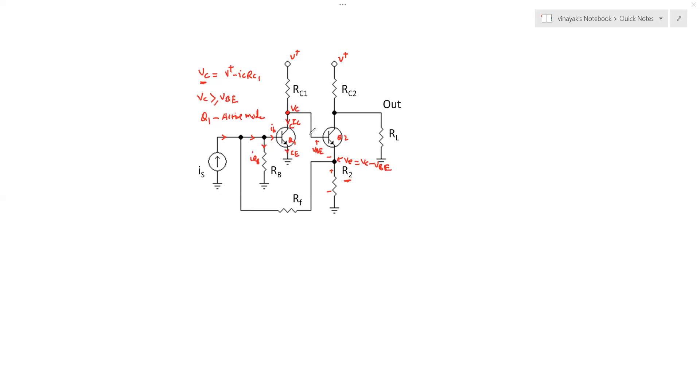So this voltage at the base minus this voltage junction drop is the voltage at the emitter. So this second configuration consisting of transistor Q2 and RC2 and R2 is acting as a common emitter node configuration CE mode and it has R2 acting as emitter degeneration resistor.